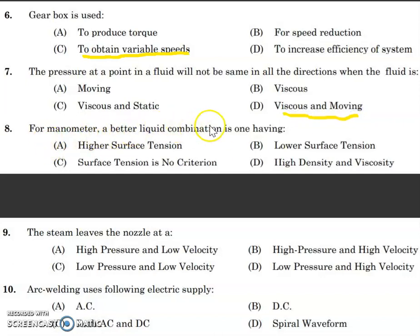For a manometer, the better liquid combination is one having — higher surface tension, lower surface tension, surface tension is non-criteria, or high density and viscosity. We commonly use mercury in a manometer. Observing it in a capillary tube, the surface tension property is relevant. Higher surface tension is the predominant factor, so the answer is higher surface tension.